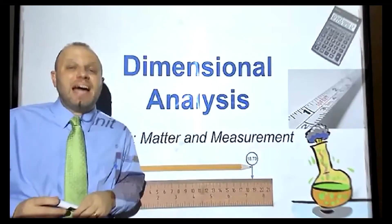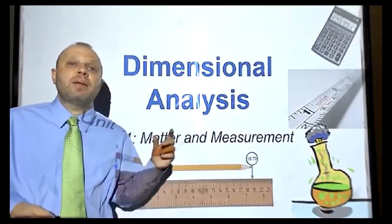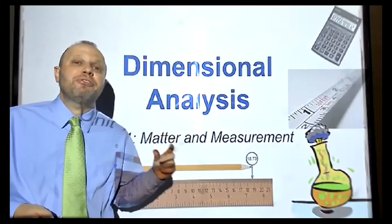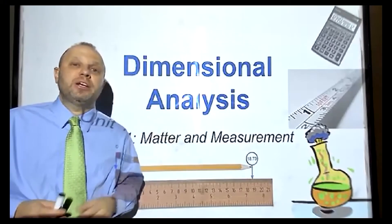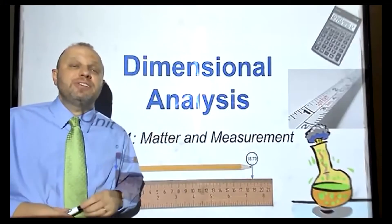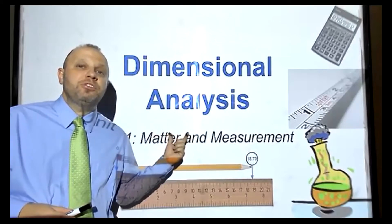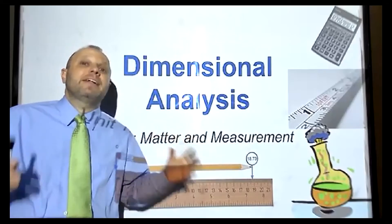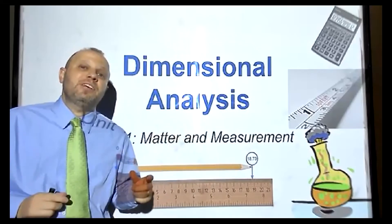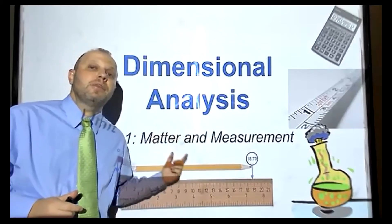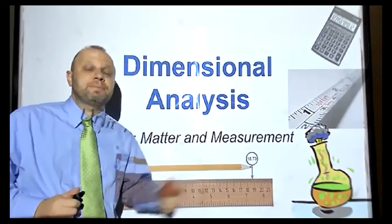The only difference is now we're going to be looking at instances where we have units on both the top and bottom of a fraction that must be changed to another unit. Before, if you have a unit on top, in order to cancel it, put it on the bottom — that's still going to be true. But now we also have a second scenario where we start off with a unit on the bottom and in order to cancel it out, we have to put it on top.